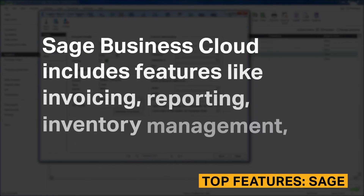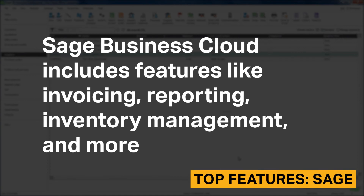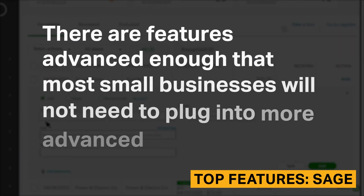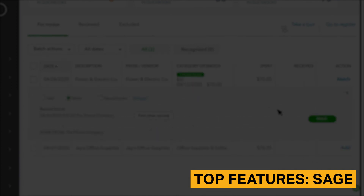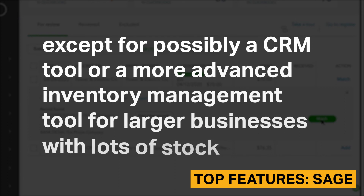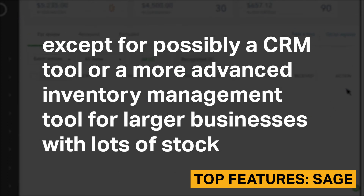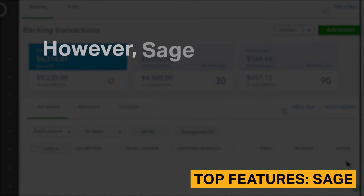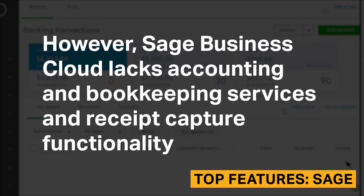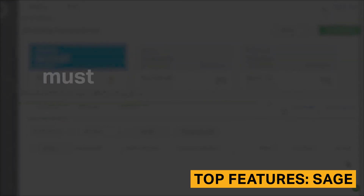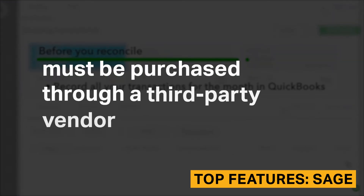Sage Business Cloud includes features like invoicing, reporting, inventory management, and more. There are features advanced enough that most small businesses will not need to plug into more advanced third-party applications, except for possibly a CRM tool or a more advanced inventory management tool for large businesses with lots of stock. However, Sage Business Cloud lacks accounting and bookkeeping services, and receipt capture functionality must be purchased through a third-party vendor.